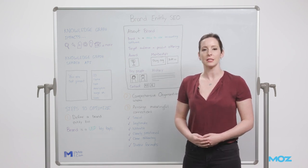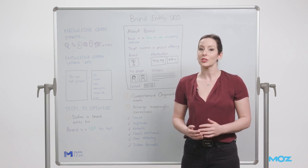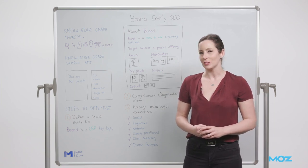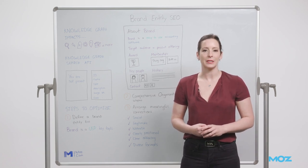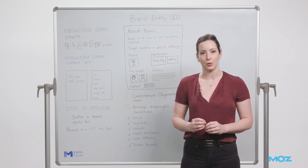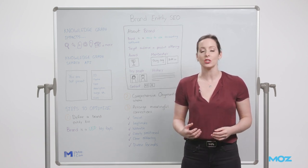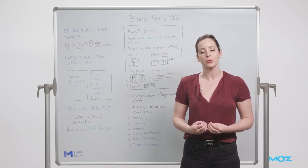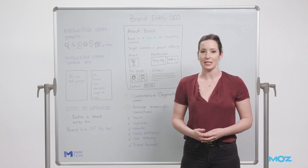The first step to befriend Google is to define an entity bio — essentially who you are as a brand — which sounds ridiculously easy. But let's just start with your name. Walk over to each department and ask them to write down the brand name. Some will write it as you expect, some will have different spacing or capitalization, others the website URL, others the legal entity name. This is a problem because Google's natural language processing is sensitive to spelling and casing, so each of these can be interpreted as different entities.